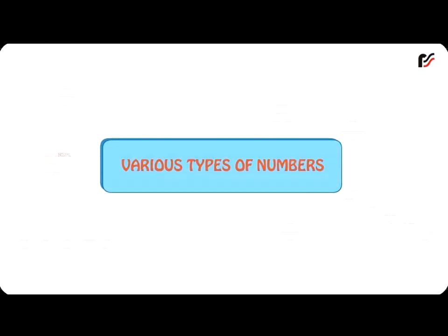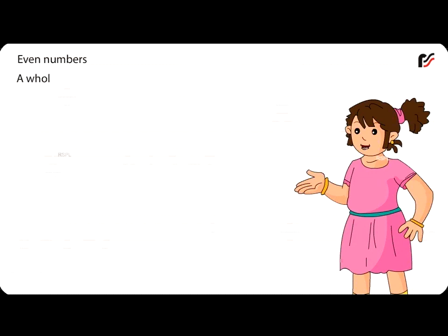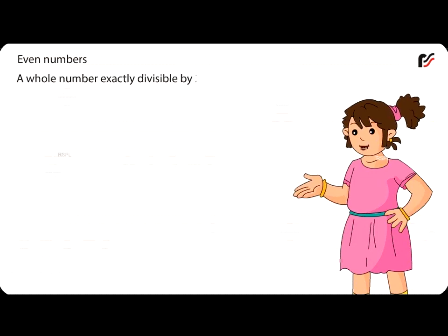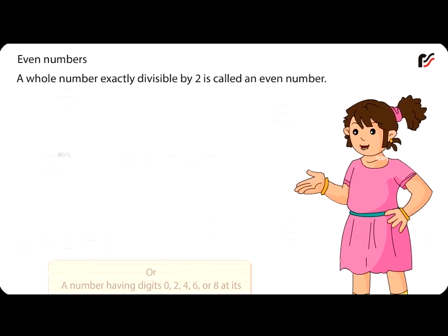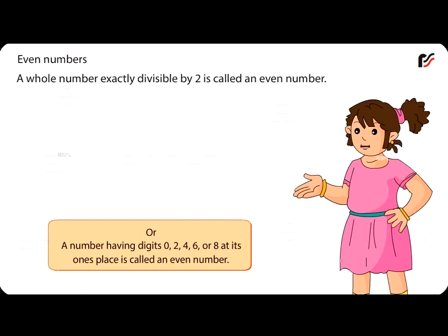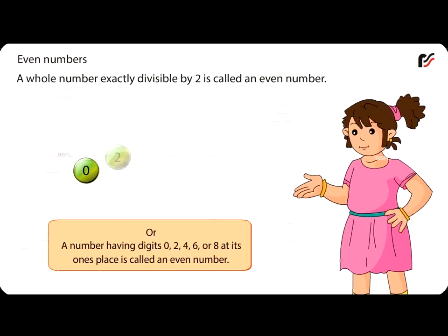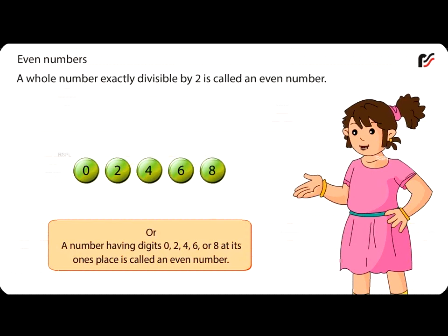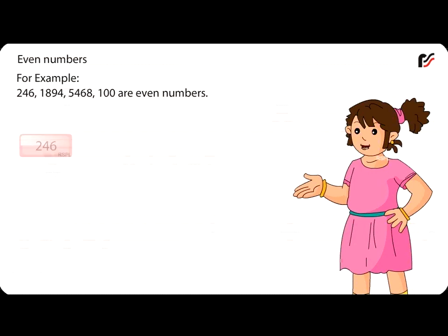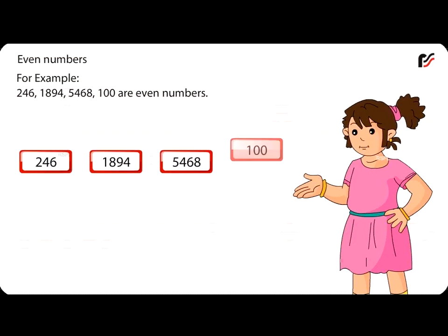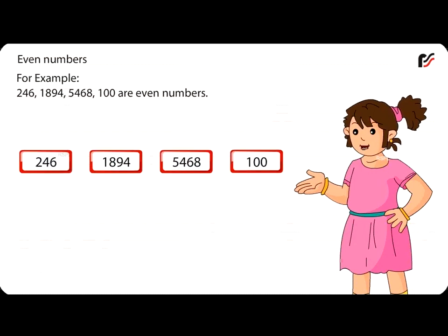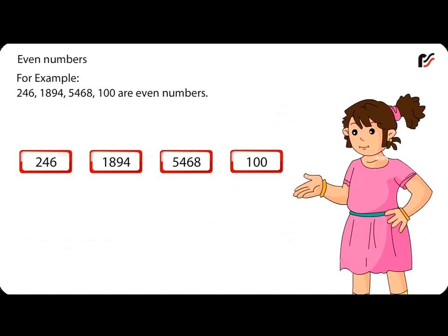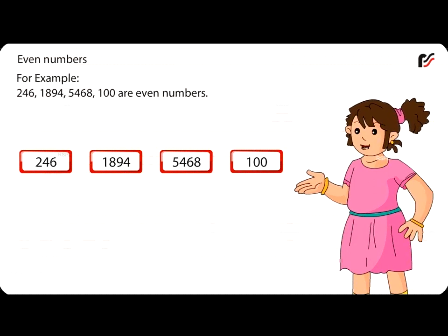Various Types of Numbers. Even Numbers: A whole number exactly divisible by 2 is called an even number. Or, a number having digits 0, 2, 4, 6 or 8 at its 1's place is called an even number. For example, 246, 1894, 5468, and 100 are even numbers.